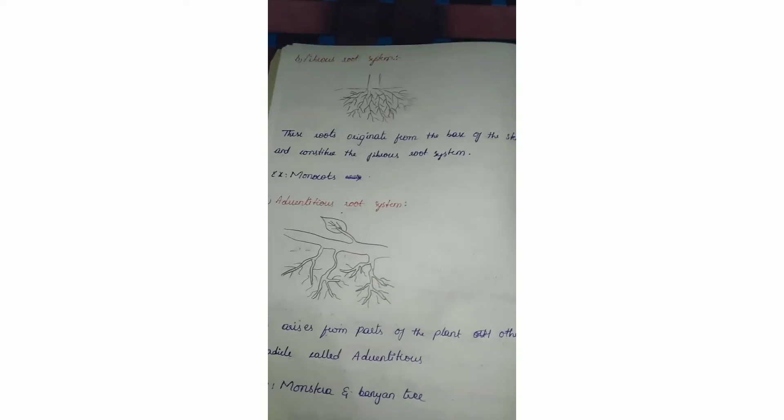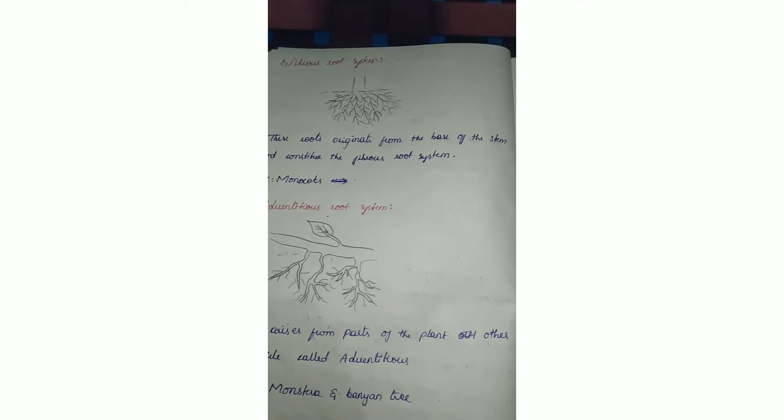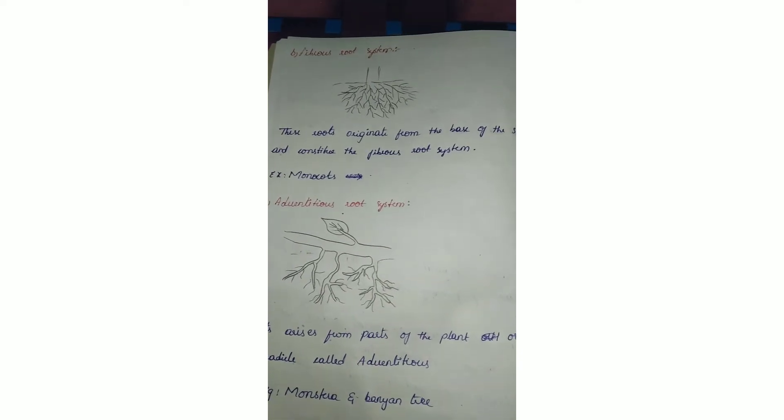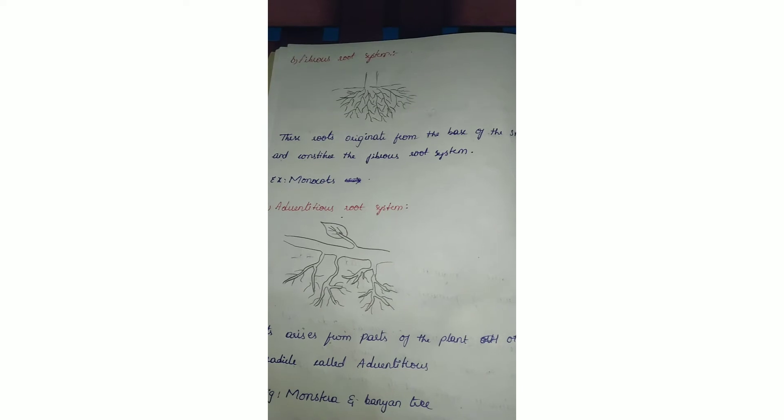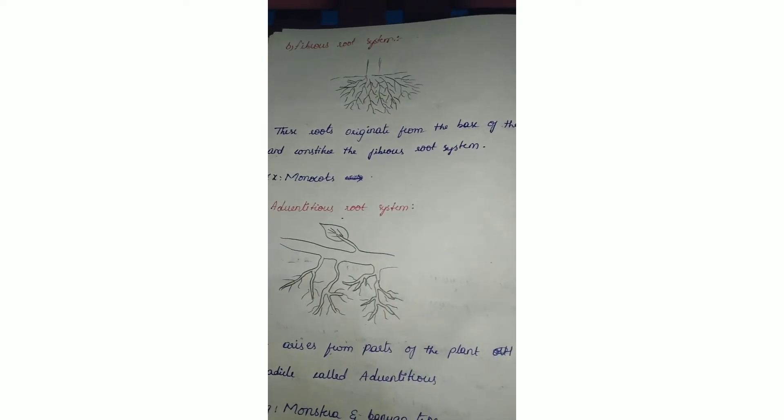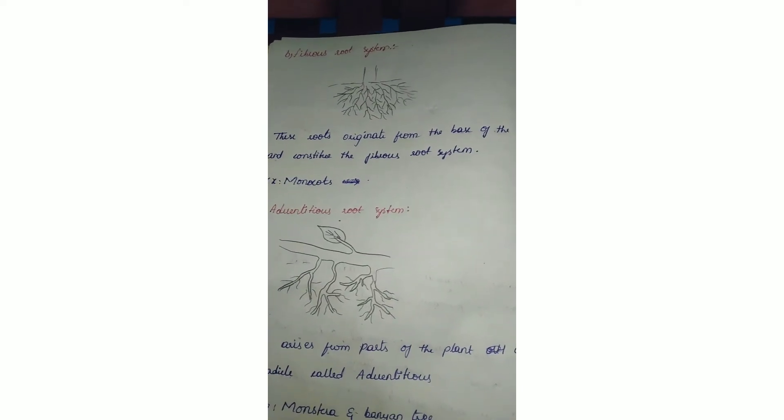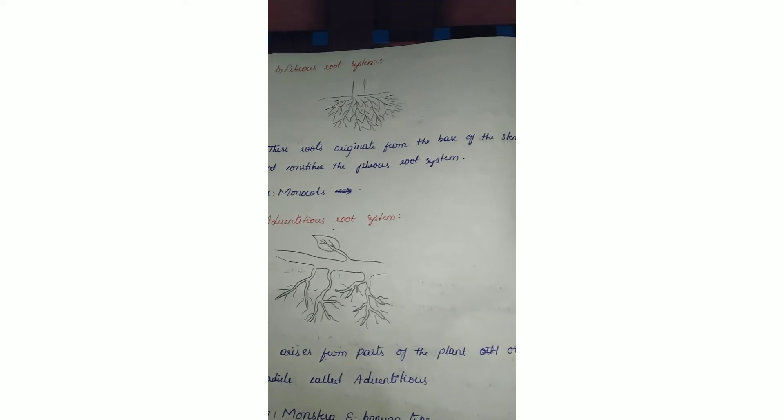The next one is fibrous root system. You can see here the roots originate from the stem, but there is no main axis like in the tap root system.